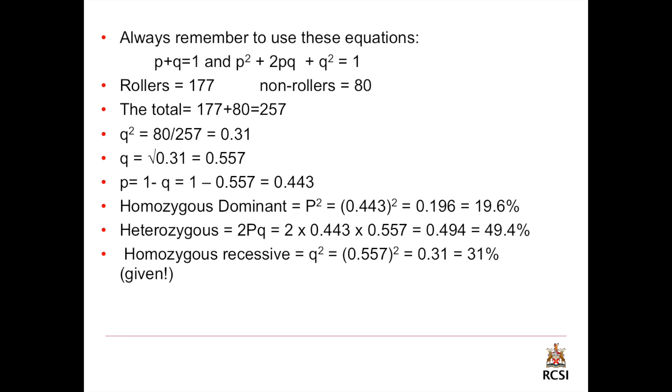Which will give us after we multiply it by 100, 31%. To check that your calculation is right, you should use the binomial equation, and it should give you 1 if you did not use the percentages. But if you use the percentages, it should give you 100%. So total of the percentages is 19.6 plus 49.4 plus 31 will equal 100%. And that means that your work is right. Well done.